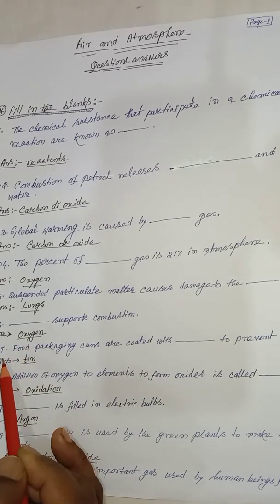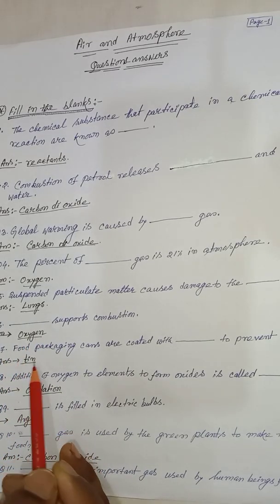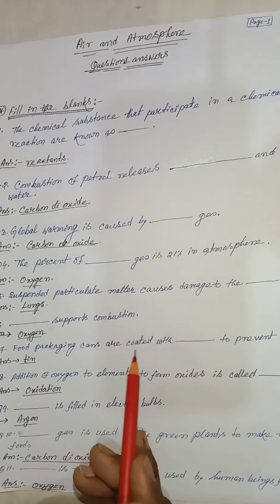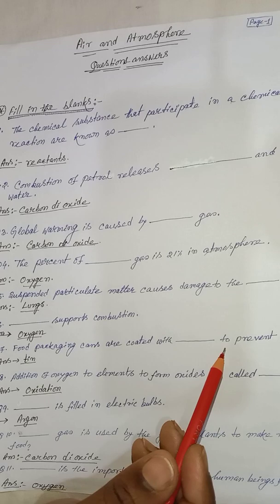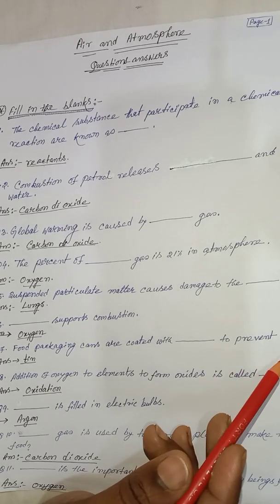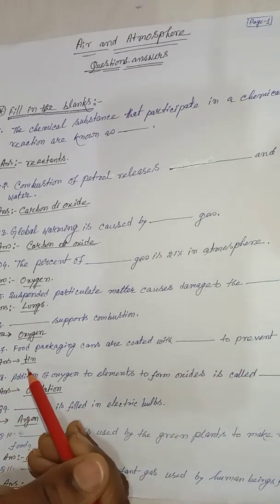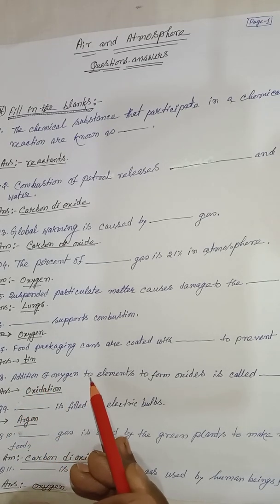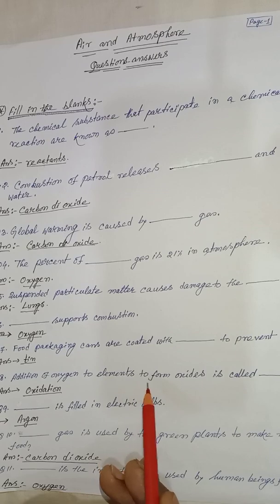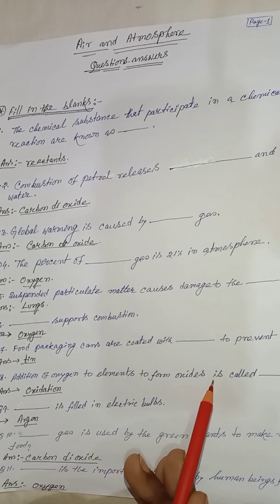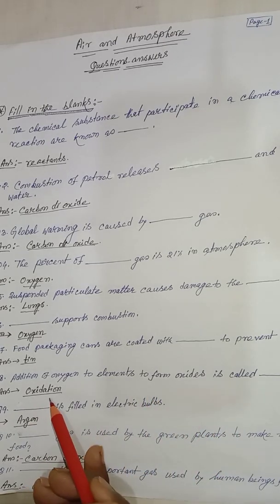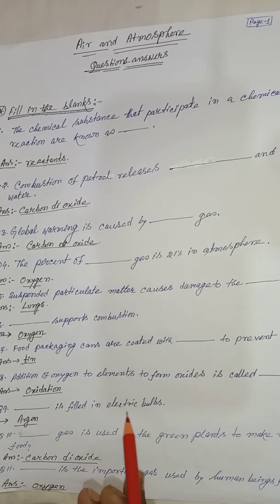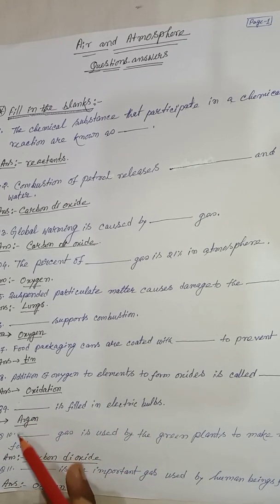The food packaging cans are coated with tin to prevent rusting. Addition of oxygen to elements to form an oxide is called oxidation. The gas filled in electric bulbs is argon.